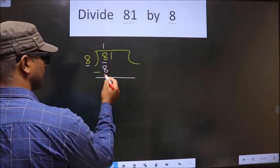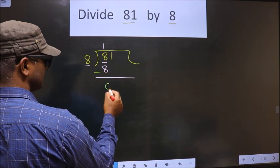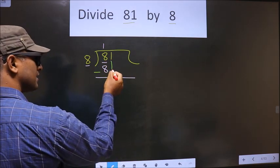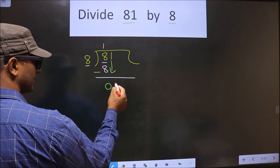Now, we should subtract. So, 8 minus 8 is 0. Now, we bring this number down. That is 1.